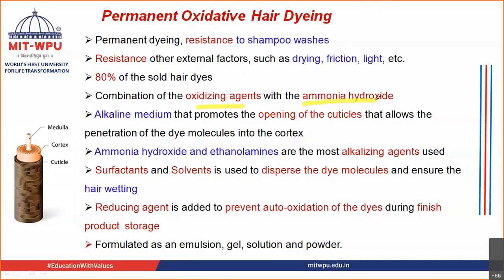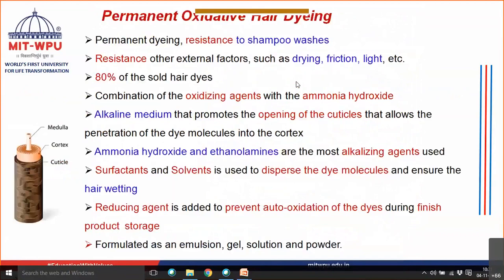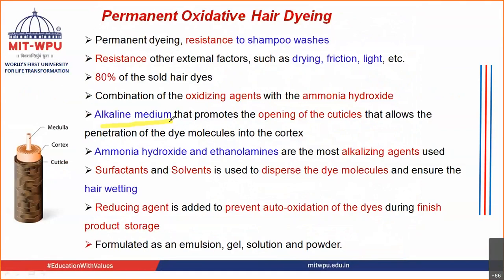So you have oxidizing agent and you have alkaline agent in the form of ammonium hydroxide or ammonia. The oxidizing agent basically oxidizes the primary intermediates so that they do a reaction with the coupling agent. Whereas your alkaline medium — in the form of ammonium hydroxide, monoethanolamine, or ammonia — promotes the environment which will facilitate the oxidation reaction.